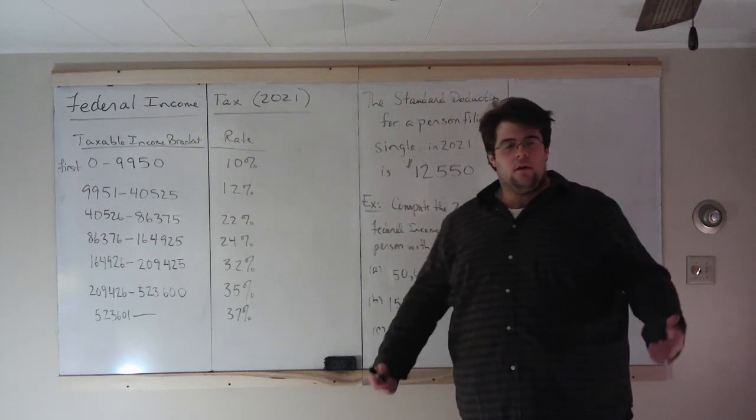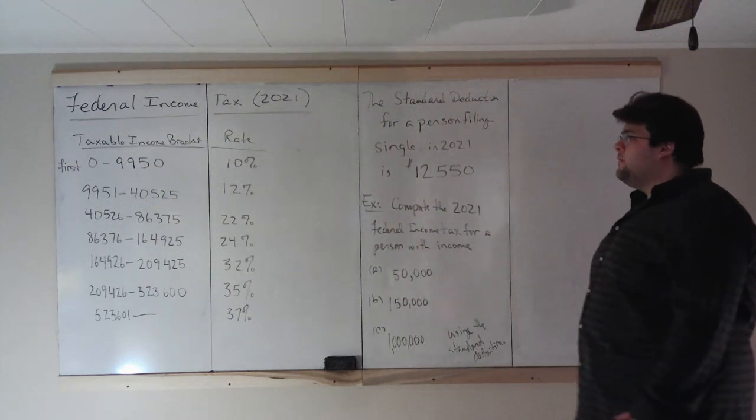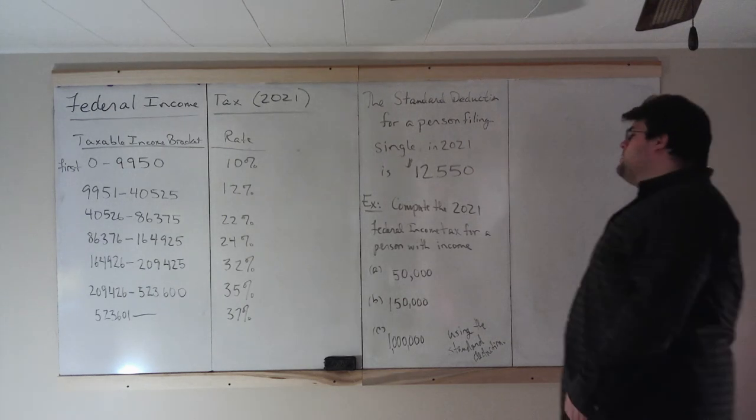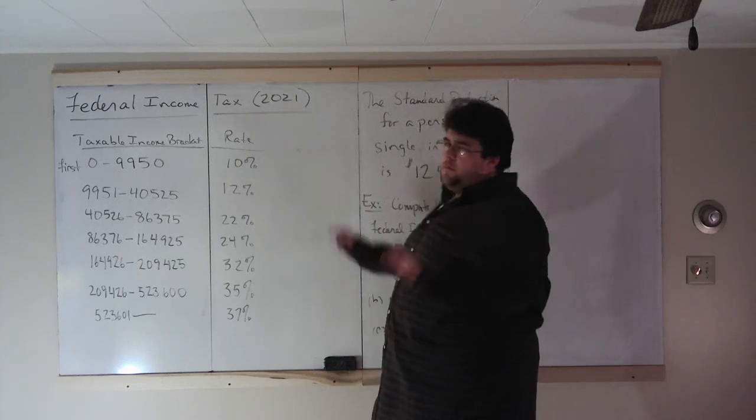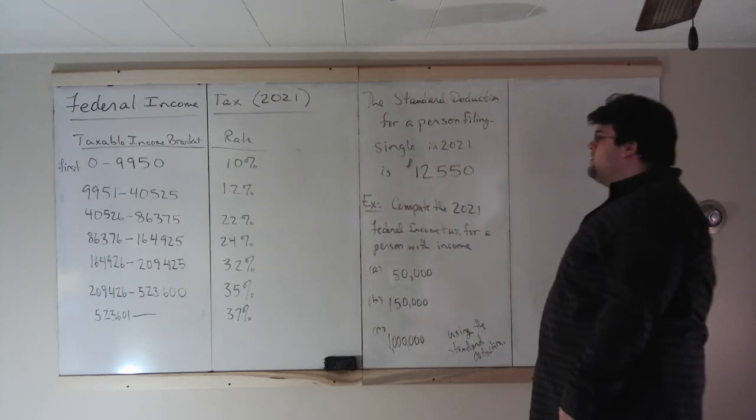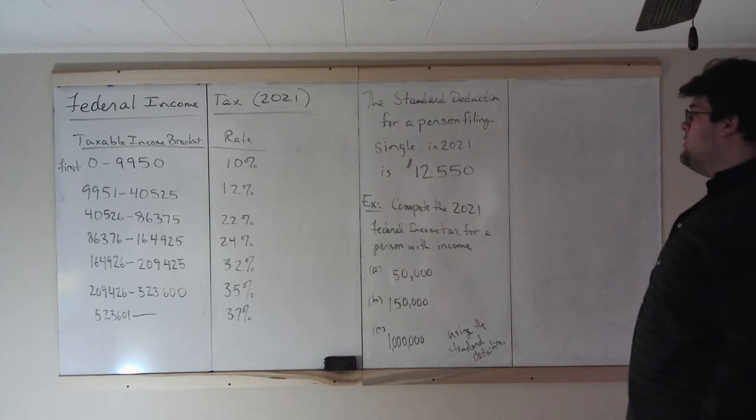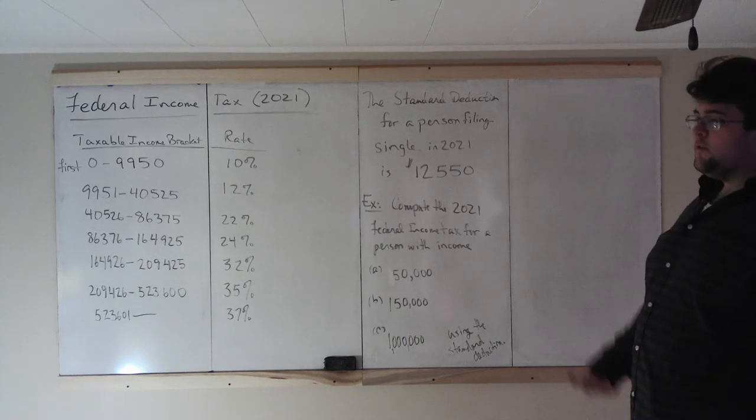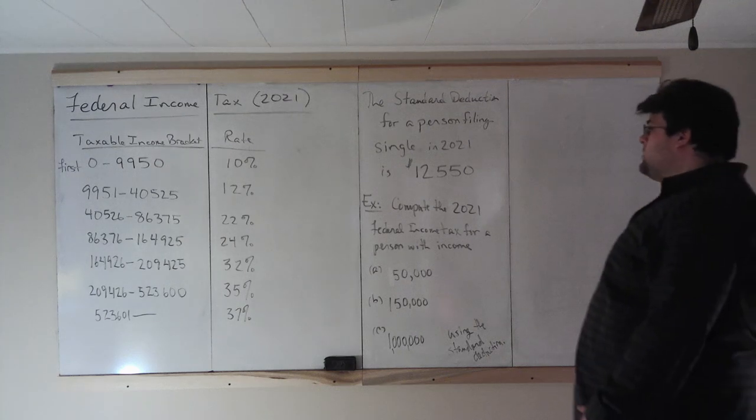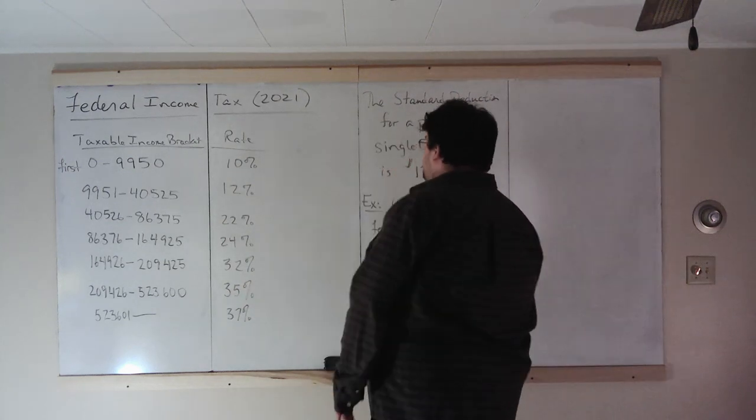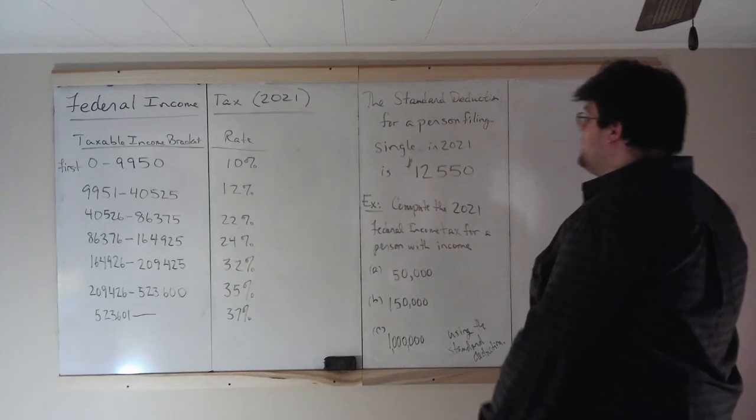Next, we're going to take a look at a couple basic examples of federal income tax computation for the year 2021. Now, these numbers change every year, so just keep that in mind. And what you're filing this year for the other day, April 15th, would be with the 2020 numbers because it was filed for the year 2020. So these are the numbers that would be used for filing by April 15th, 2022, for your 2021 tax year.